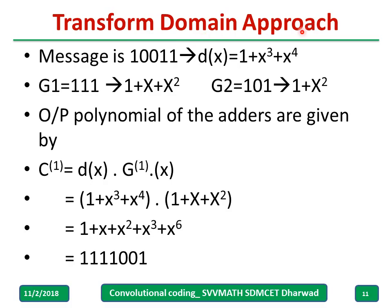Now for the transform domain approach, we write the data bits, g1, and g2 all in polynomial form. D of x equals 1 plus x cubed plus x to the 4th (since input is 10011). The output polynomial of the first adder is given by c of x (1) equal to d of x multiplied by g of x (1). Multiplying these polynomials gives the result.